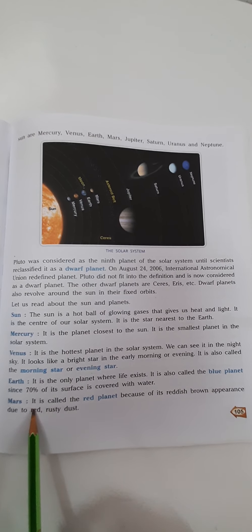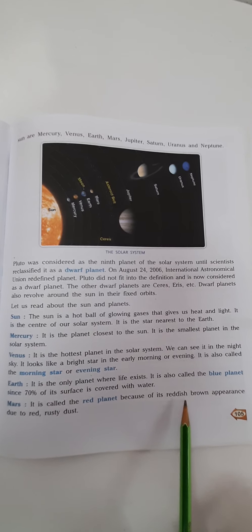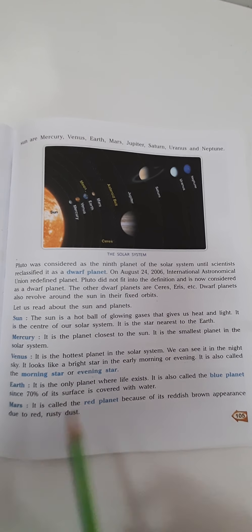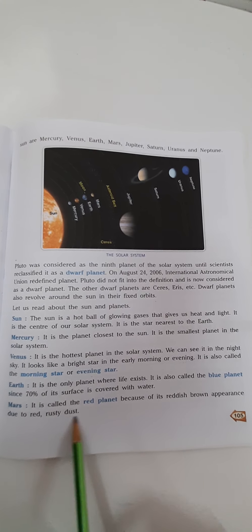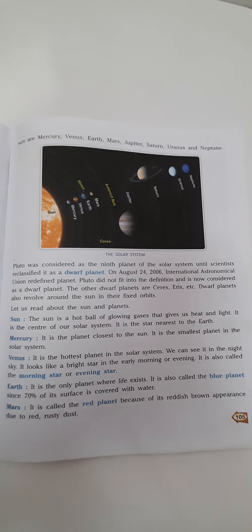Next is Mars. It is called the red planet because of its reddish brown appearance or due to red rusty dust. Because of this rusty dust, it is known as the red planet.